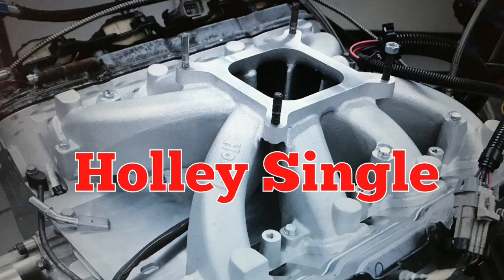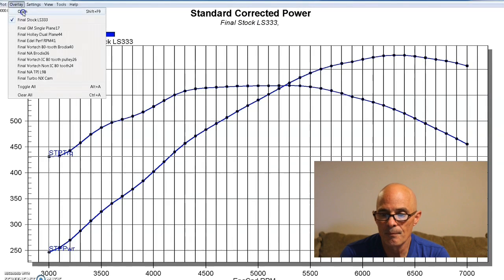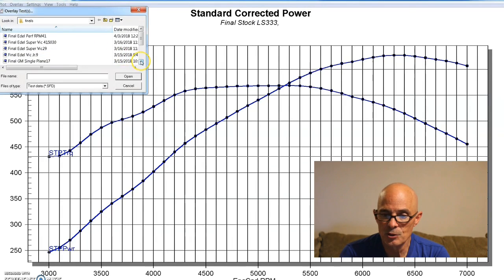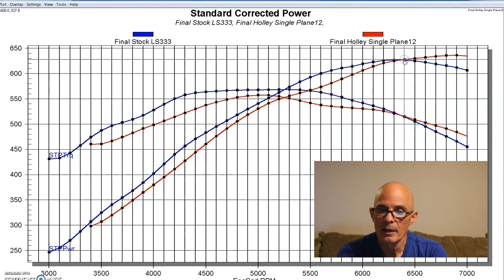Now we're going to take a look at another single-plane intake. Next up is a Holley single-plane intake. Like the GM version, crossover point, look at that. Once again, 6,400 RPM where the single-plane started making more power.